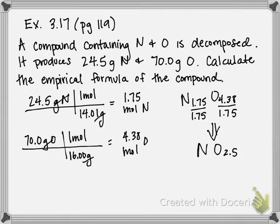So let's try 2. If I multiply both of these by 2, I'm going to get N2 and oxygen 2.5 times 2 is going to be O5.